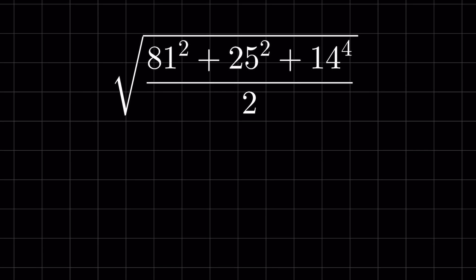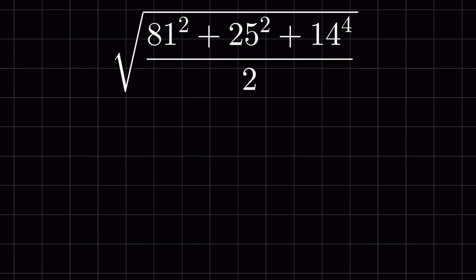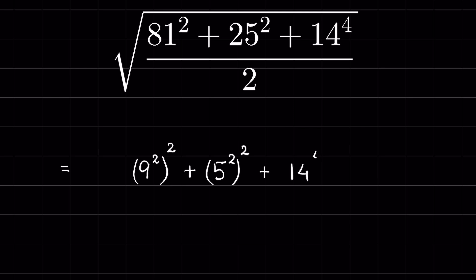We need to simplify the expression: square root of (81 squared plus 25 squared plus 14 to the power 4, all divided by 2). We can rewrite 81 squared as (9 squared) whole squared, and 25 squared as (5 squared) whole squared, plus 14 to the power 4, divided by 2, under the square root.